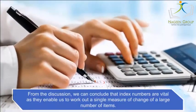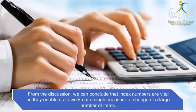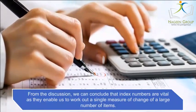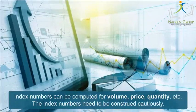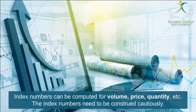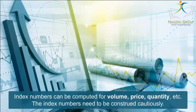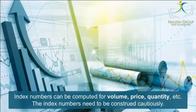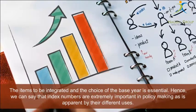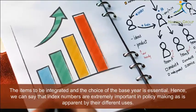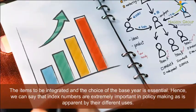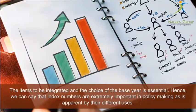Conclusion: From the discussion, we can conclude that index numbers are vital as they enable us to work out a single measure of change for a large number of items. Index numbers can be computed for volume, price, quantity, etc. They need to be constructed cautiously — the items to be integrated and the choice of the base year are essential. Hence, index numbers are extremely important in policy making, as is apparent from their different uses.